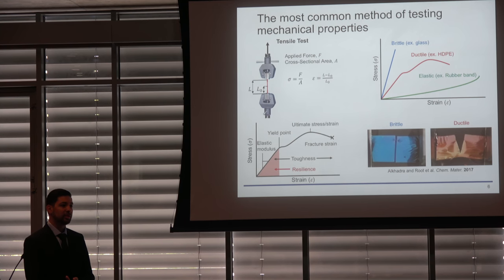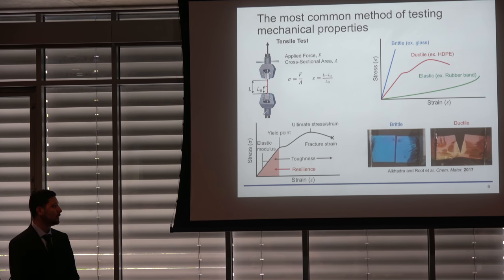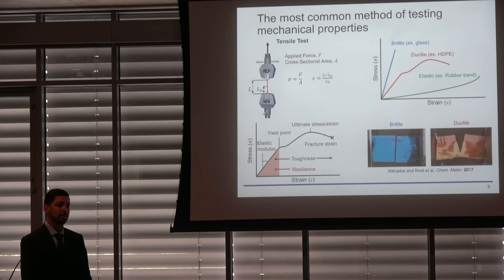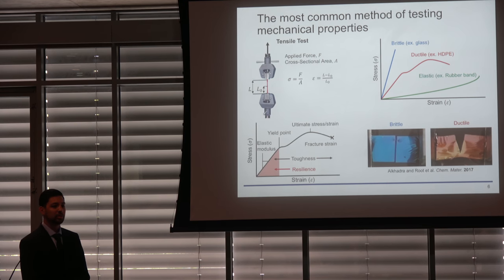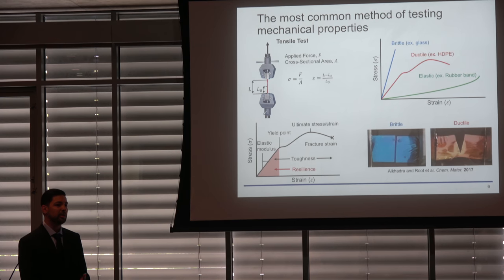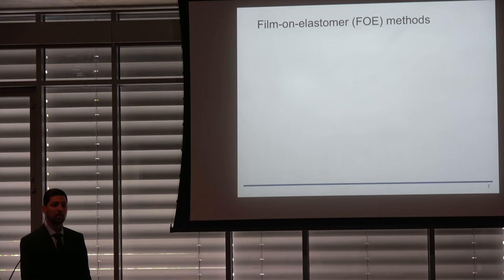These tensile test methods are great for bulk films, but not amenable to thin film materials. Organic semiconductors are typically fabricated at 50 to 500 nanometers—really thin and fragile, difficult to manipulate. As freestanding films, they often crumble due to their own van der Waals forces. Additionally, synthesis only yields milligram-scale quantities, whereas bulk samples require gram scales, which is typically beyond academic lab capabilities. We therefore need different techniques to test thin-film mechanical properties.